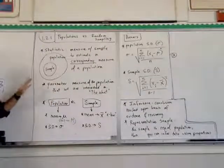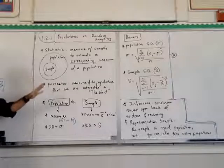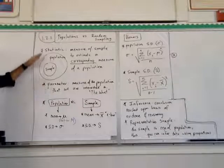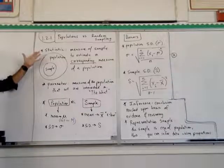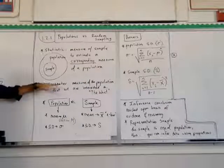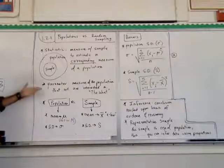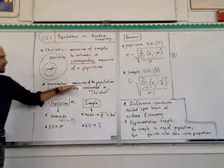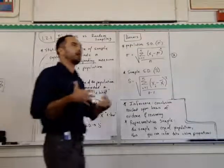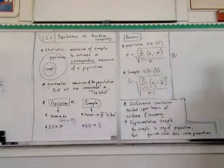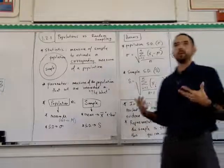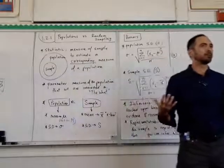This is how we're going to break apart and get more refined with seeing if something is skewed data or biased data. The statistic is just what is being measured in the sample — measuring the sample to make a corresponding measure of the population, which is a parameter. A parameter is a measure of the population we're interested in. It's the 'what,' not the 'how much.'